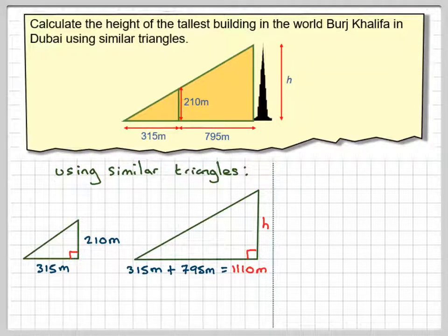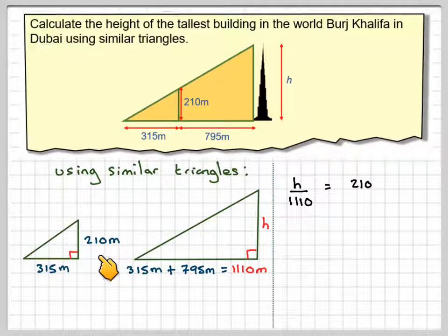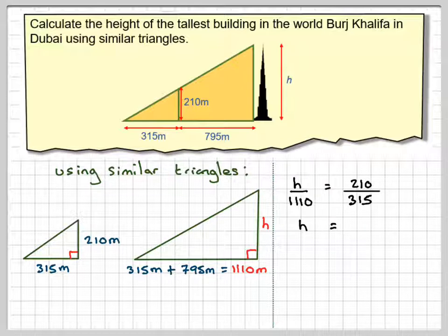And then we're going to make similar triangles. So we're going to say h over 1110 is going to be equal to the same h on the smaller triangle, 210 divided by 315, and then we're going to multiply both sides by 1110.